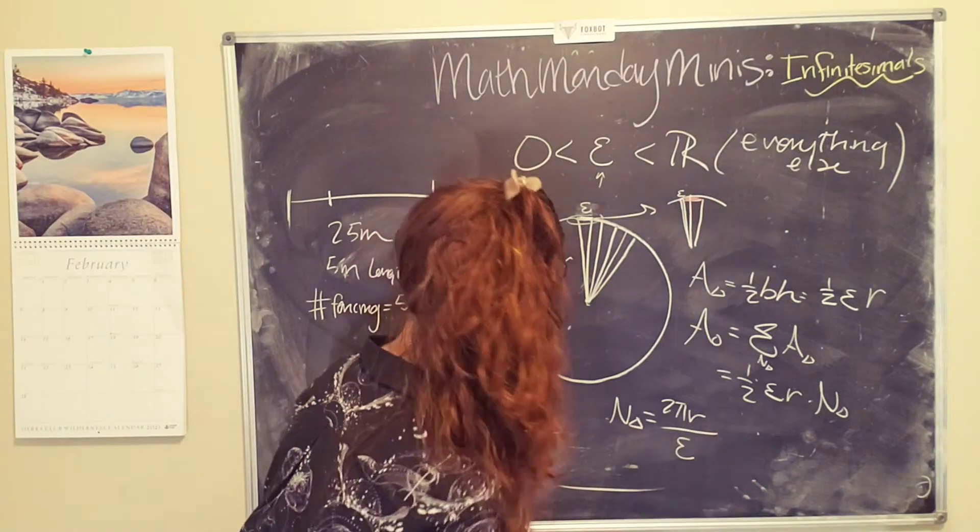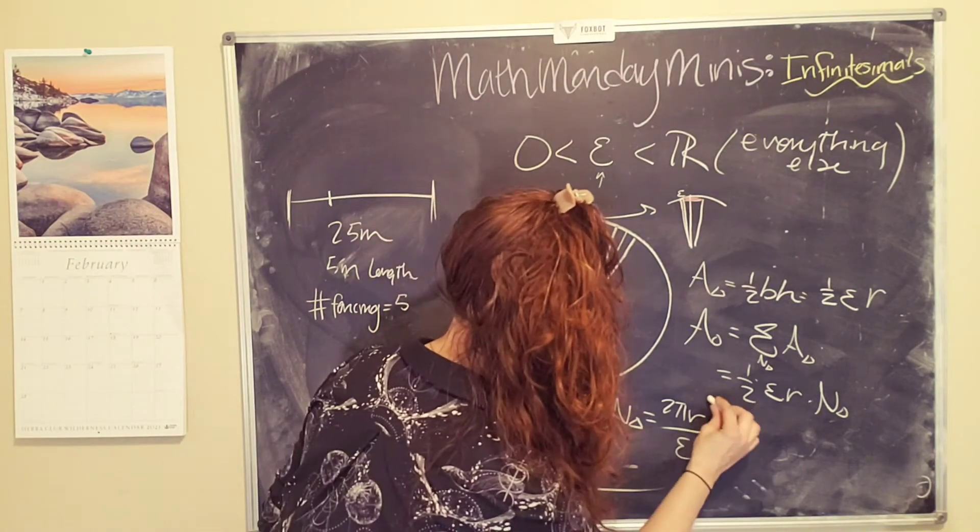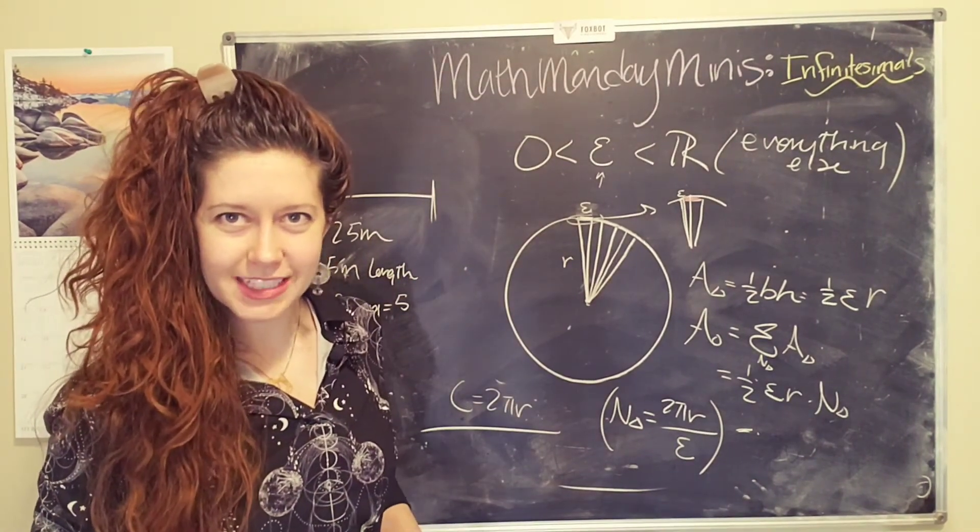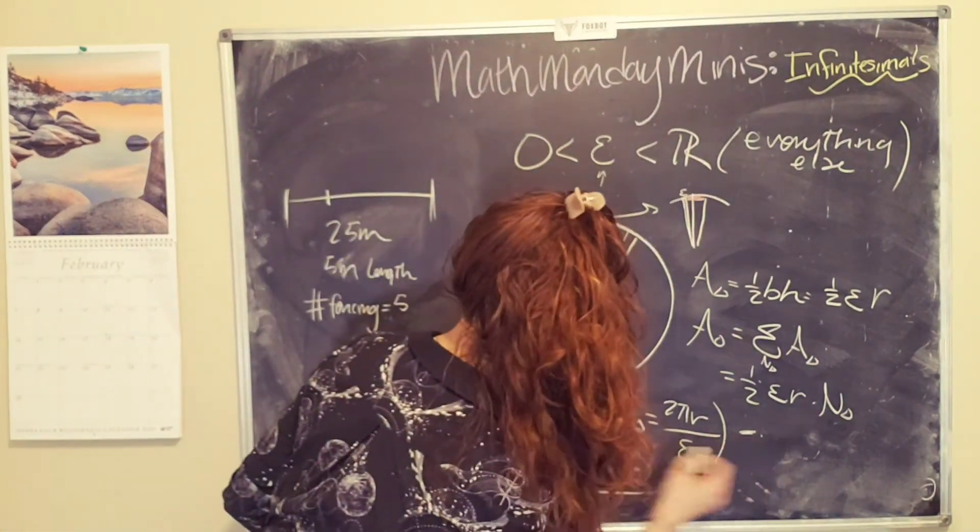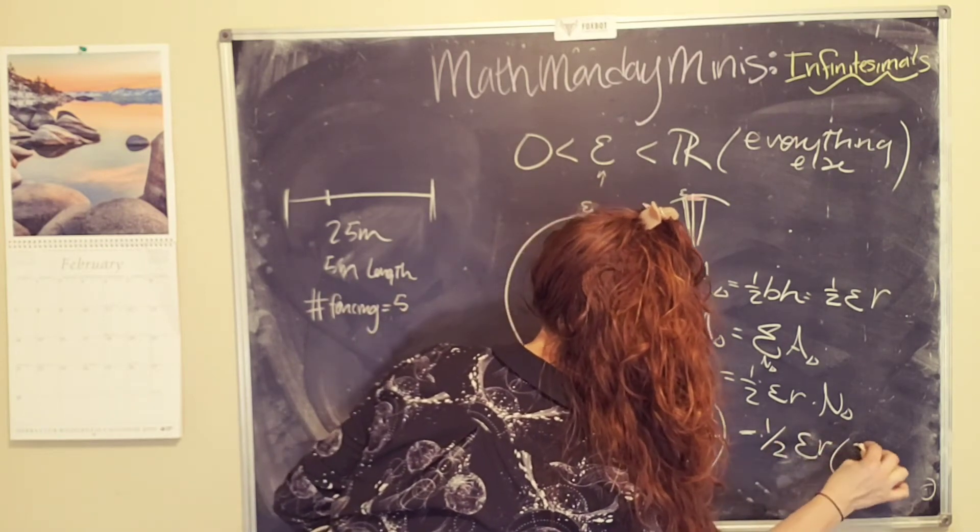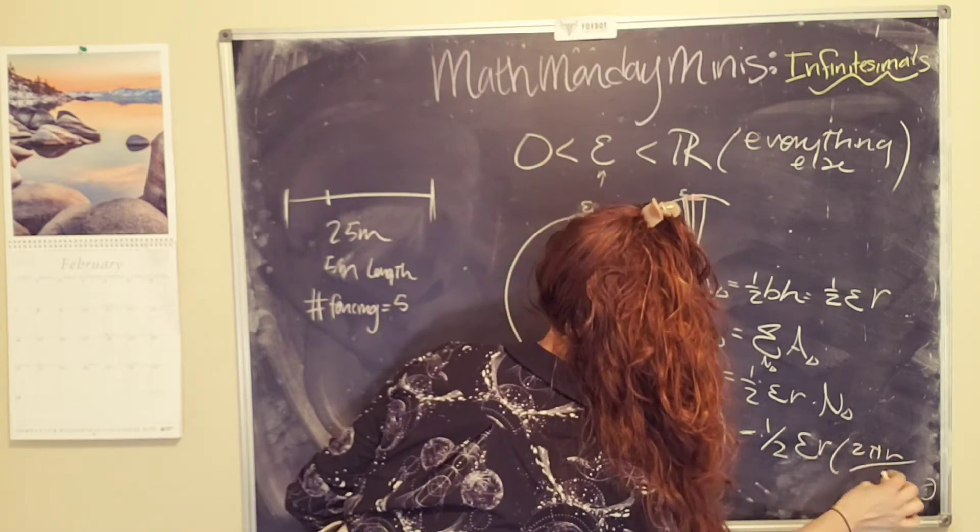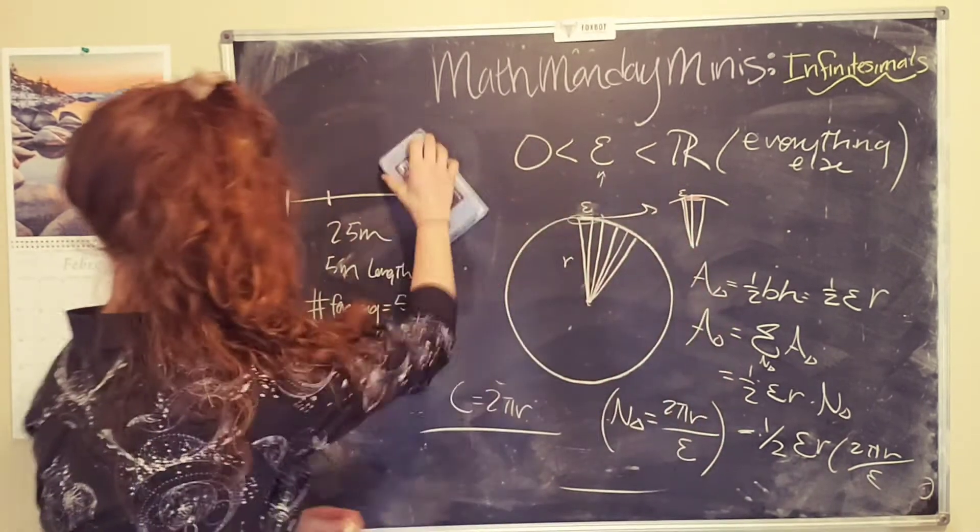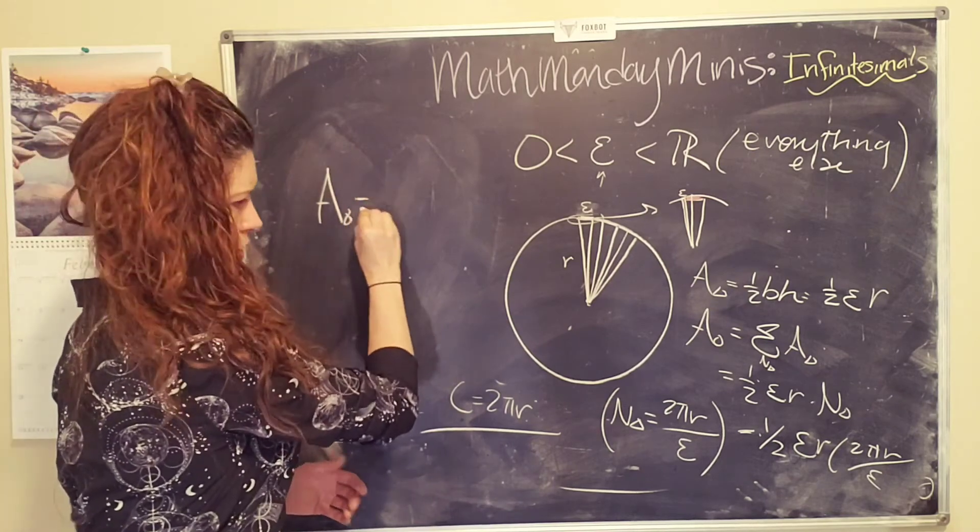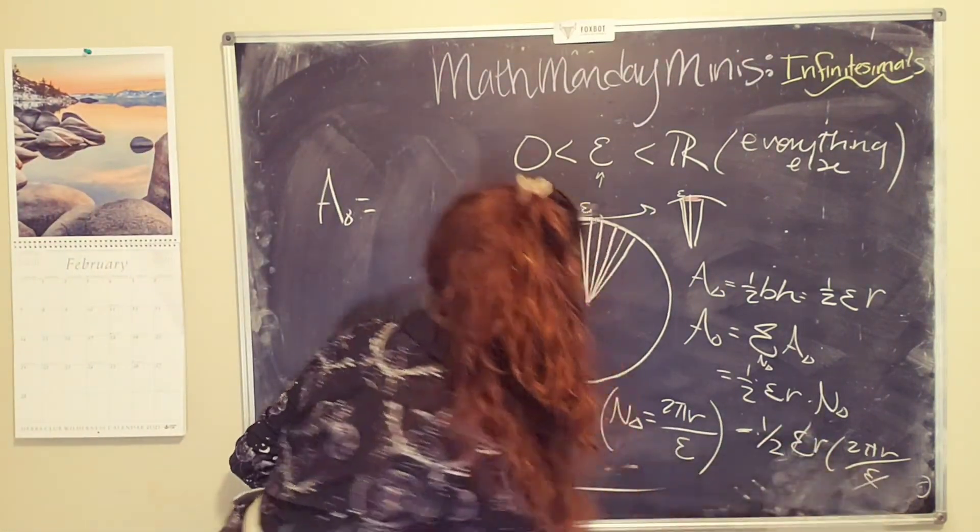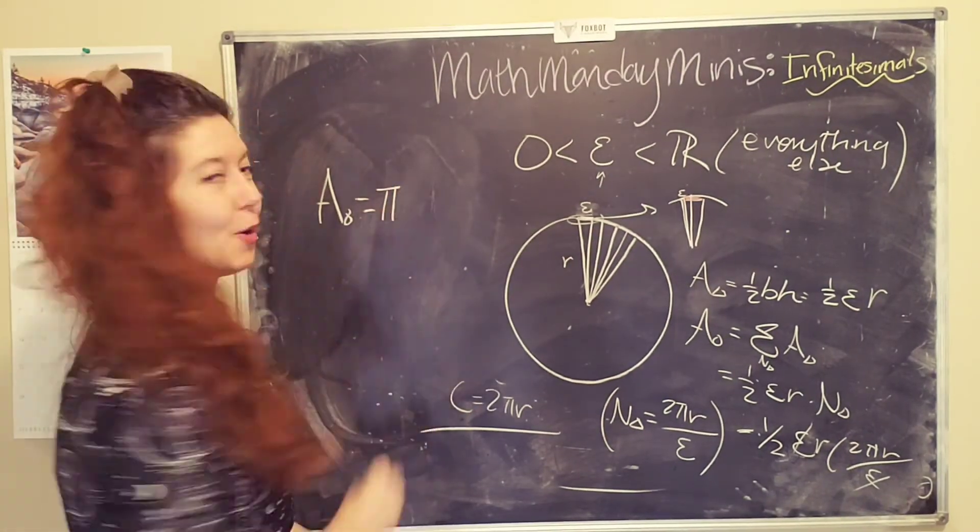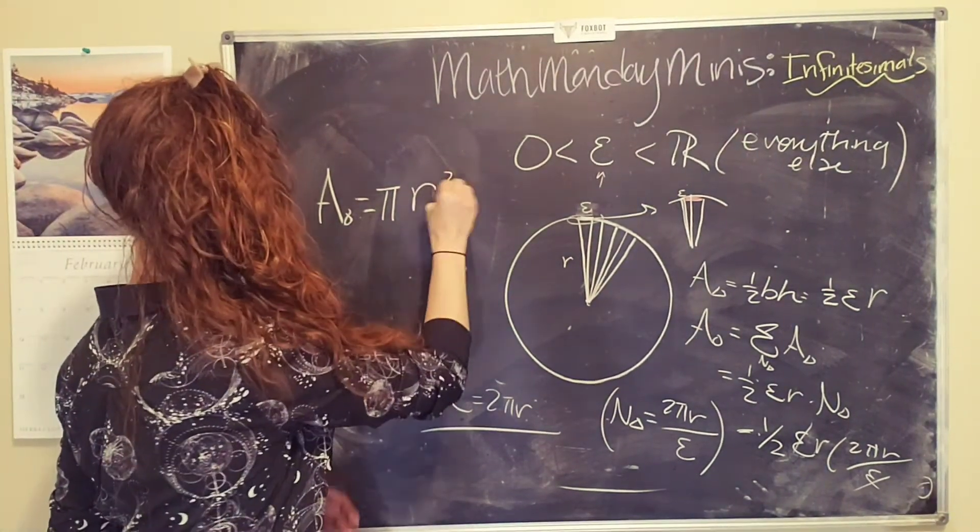Okay, so then we plug this in. So we'll do that in parentheses. Then what we get is one half epsilon times r times 2 pi r over epsilon. This is getting really small. So the area of our circle, the epsilons cancel. Boom. Two divided by one half also cancels. So we end up with pi r squared. Woo!